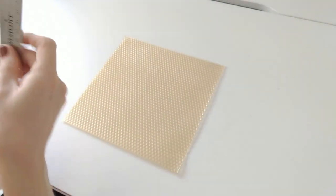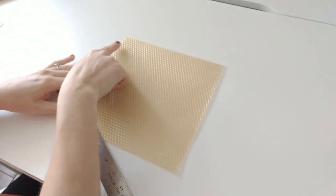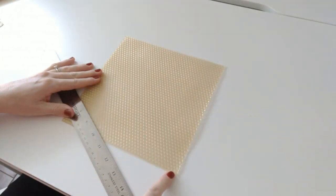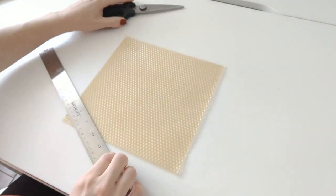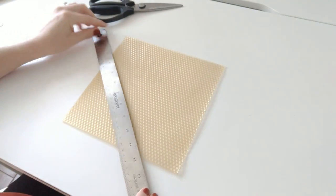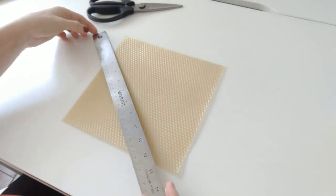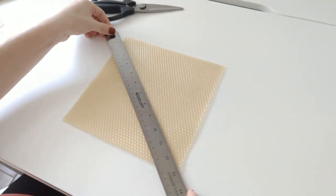This next candle will also be a taper candle but with a little twist. Literally. Use another eight inch wide sheet. Now we will cut it diagonally. Move your ruler about one inch lower than the corners.